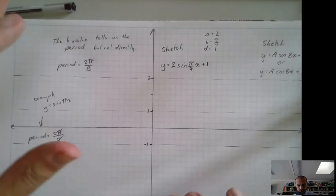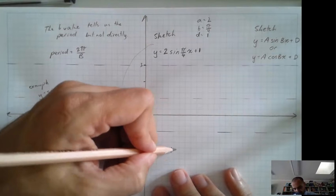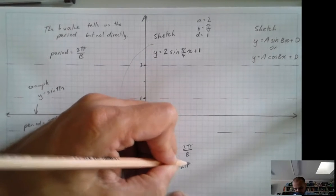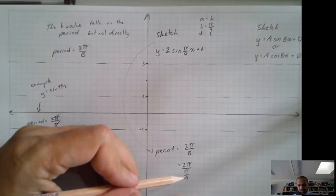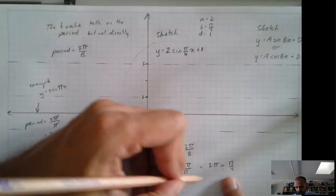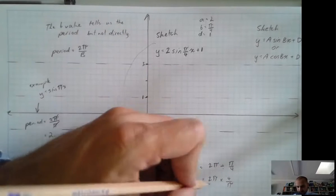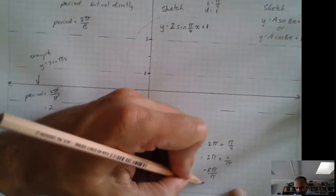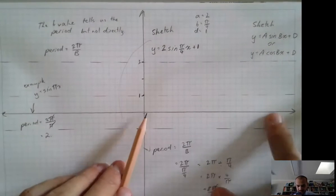Last step, really, is just to find out what the period is. So I'm just going to bring my working down here so I've got some space. Period equals 2 pi divided by b. In this case, that's 2 pi divided by the b value, which is pi on 4. And that's pretty ugly, but it's the same as writing 2 pi divided by pi on 4, which you would know is the same as 2 pi times 4 on pi, which is 8 pi on pi, which means that our period is 8.